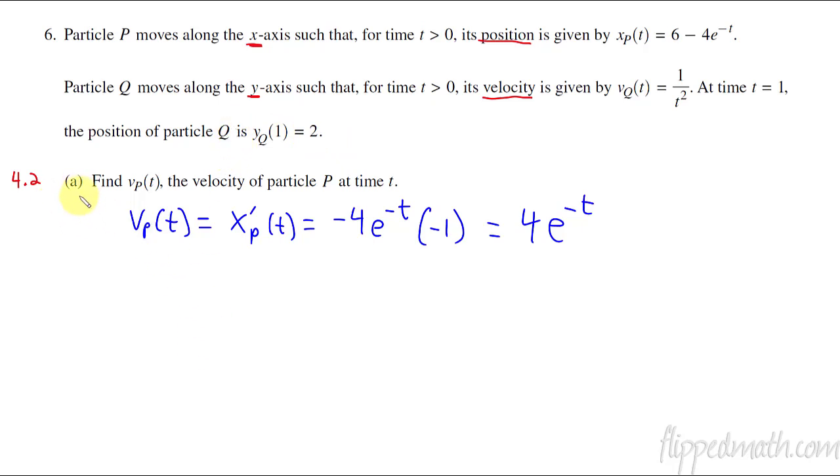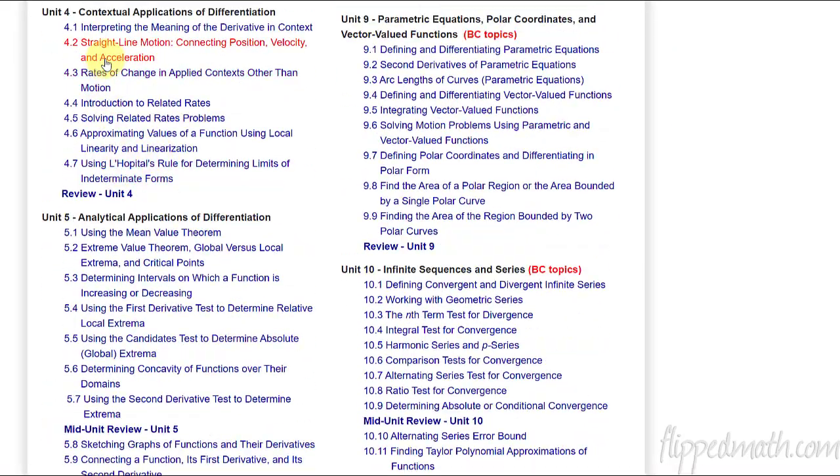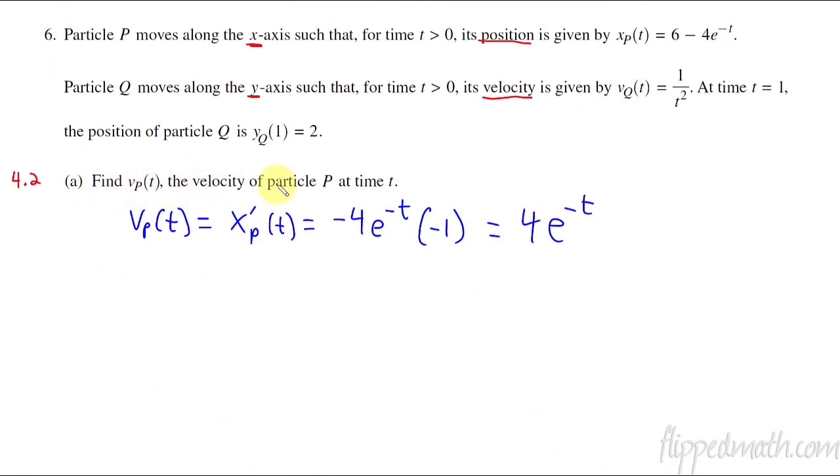So the first problem A, I put this little 4.2 here, so this number just represents what lesson this is from. 4.2 is straight line motion, connecting position, velocity, and acceleration. To find the velocity of particle P, we take particle P's derivative, because they gave us position. The V of t is equal to x prime of t. So all I did here was I just took the derivative of this thing. That one's pretty straightforward, quick little problem there.